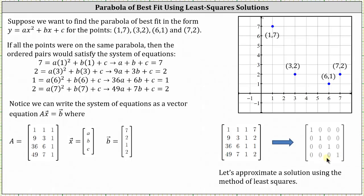Because there's no solution to the system or the matrix equation, we know all four points will not fall on the same parabola. Therefore, we'll have to find the parabola of best fit. Again, in this lesson, we'll use the method of least squares solutions.